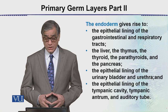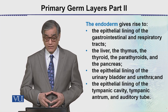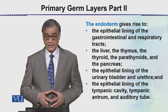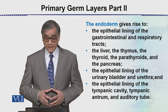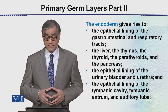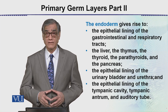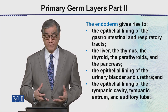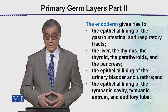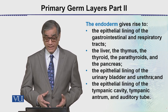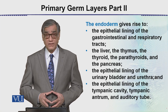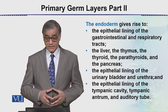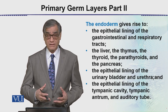The endoderm gives rise to the epithelial lining of the gastrointestinal and respiratory tract, then the liver, the thymus, the thyroid, and the parathyroid — they are all endodermal in origin — as is the pancreas. The epithelial lining of the urinary bladder and the urethra are also endodermal.